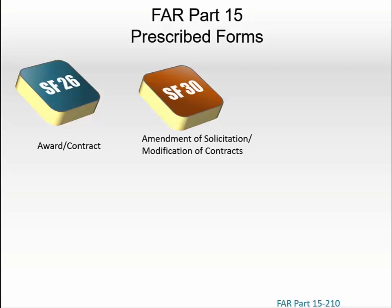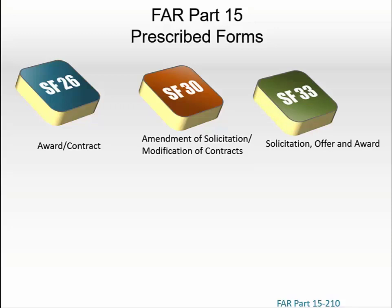Standard Form 30 can be used for amending requests for proposals and for amending requests for information, and can be used in connection with the solicitation and award of negotiated contracts. Award of such contracts may be made by either Optional Form 307, Standard Form 33, or Standard Form 26.